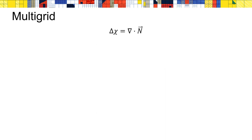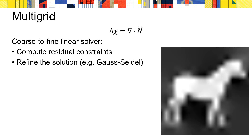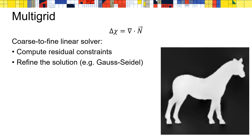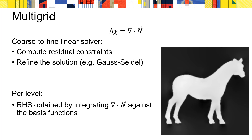Putting this together, the Poisson surface reconstruction algorithm essentially reduces to the solution of a linear system, where we seek the indicator function chi whose Laplacian is equal to the divergence of a vector field n. The vector field n is defined by the normals of the input points and is only non-zero in the vicinity of the points. Using the hierarchy, the system is solved in a coarse-to-fine manner, where at each level we estimate the residual constraints and refine the solution using an iterative solver like Gauss-Seidel relaxation. To compute the residual constraints at a given level, we need to integrate the divergence of n against the basis functions defined at that level — a point we'll come back to later.